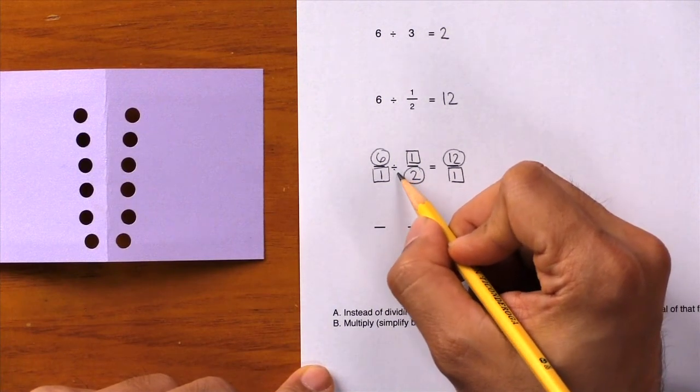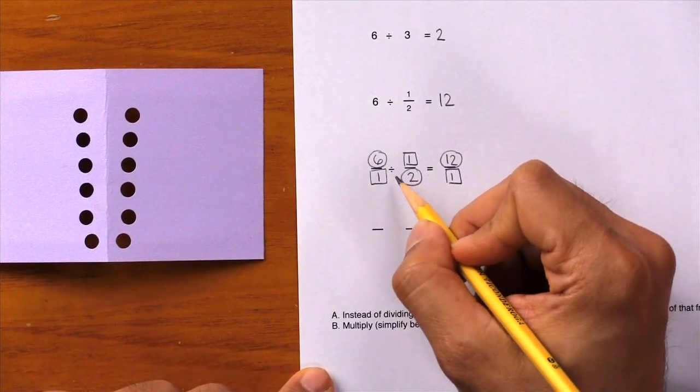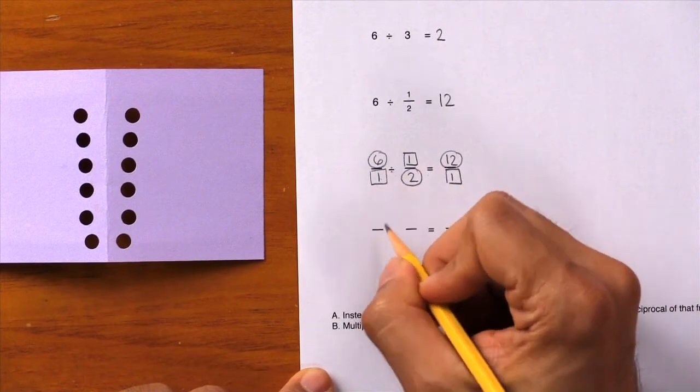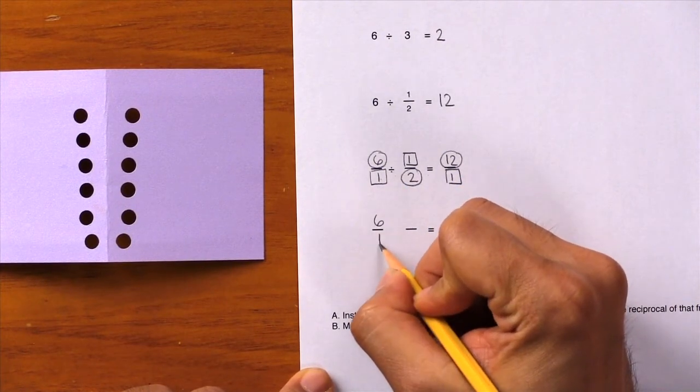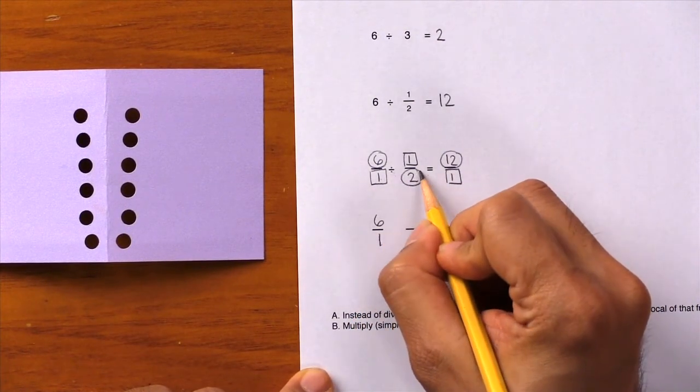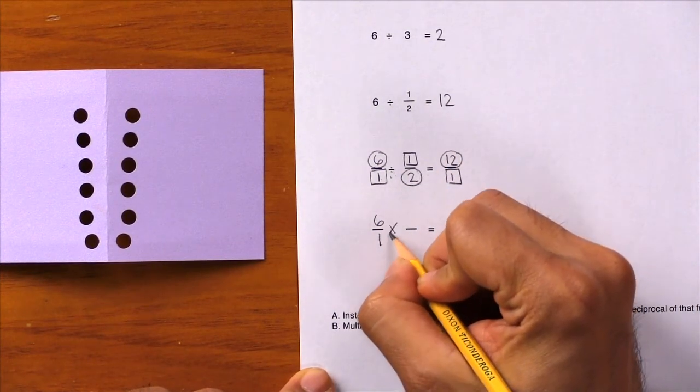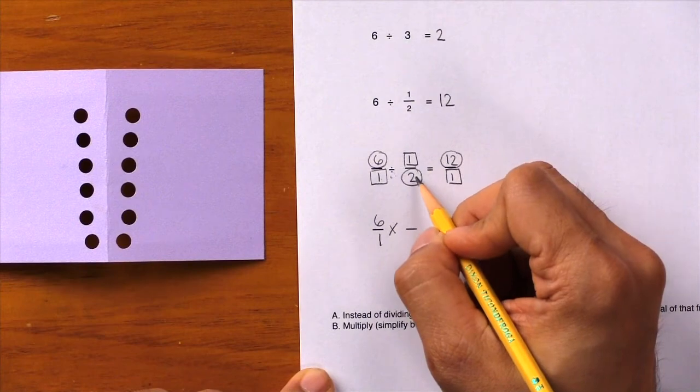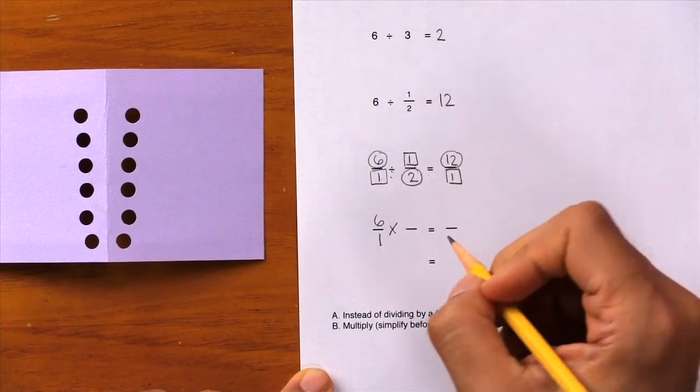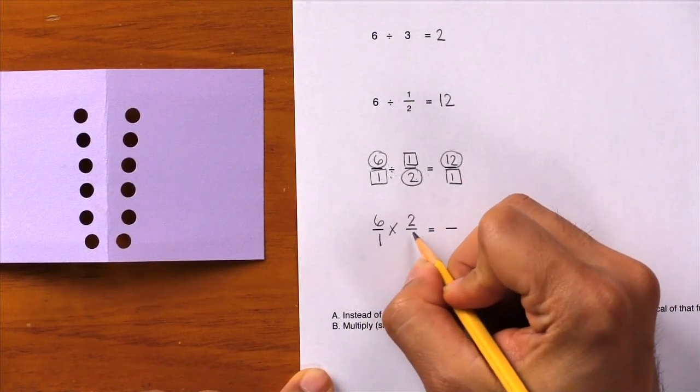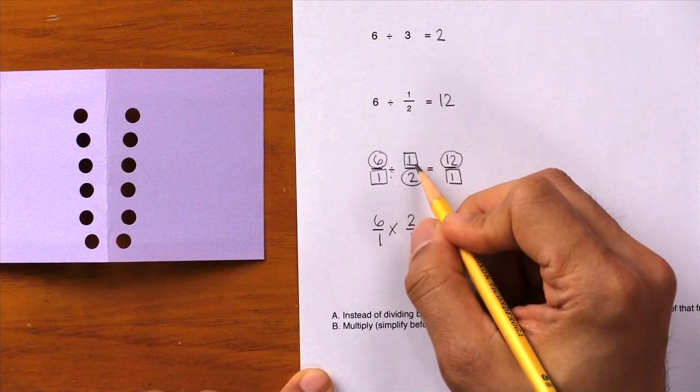So here's how we do it: instead of dividing by a fraction, we're going to multiply by the reciprocal. So let's rewrite the problem. Here we have six over one, but don't divide by a fraction—multiply by the reciprocal. We're going to multiply and take one half and just flip it around to find the reciprocal, so write two over one instead of one over two.